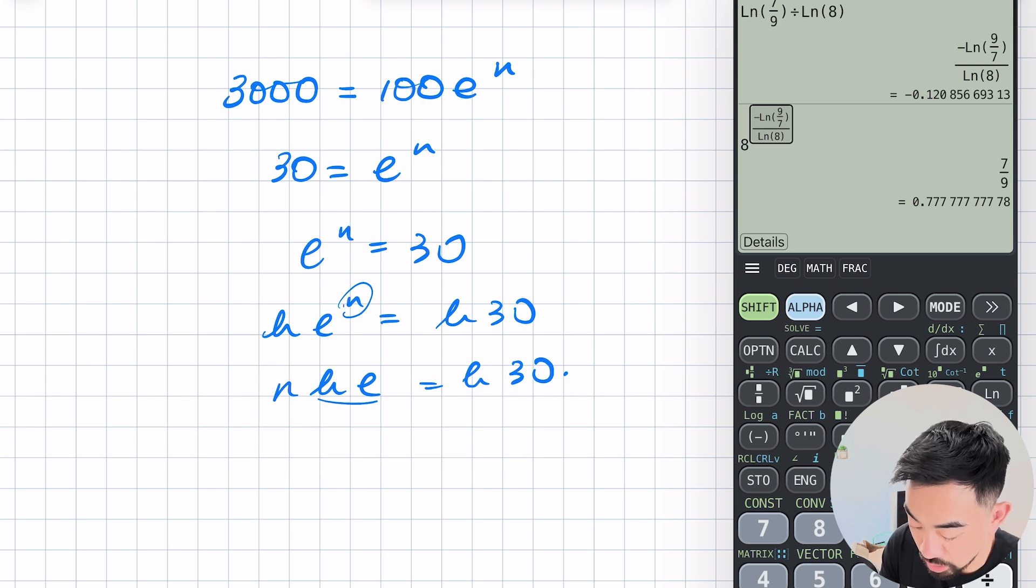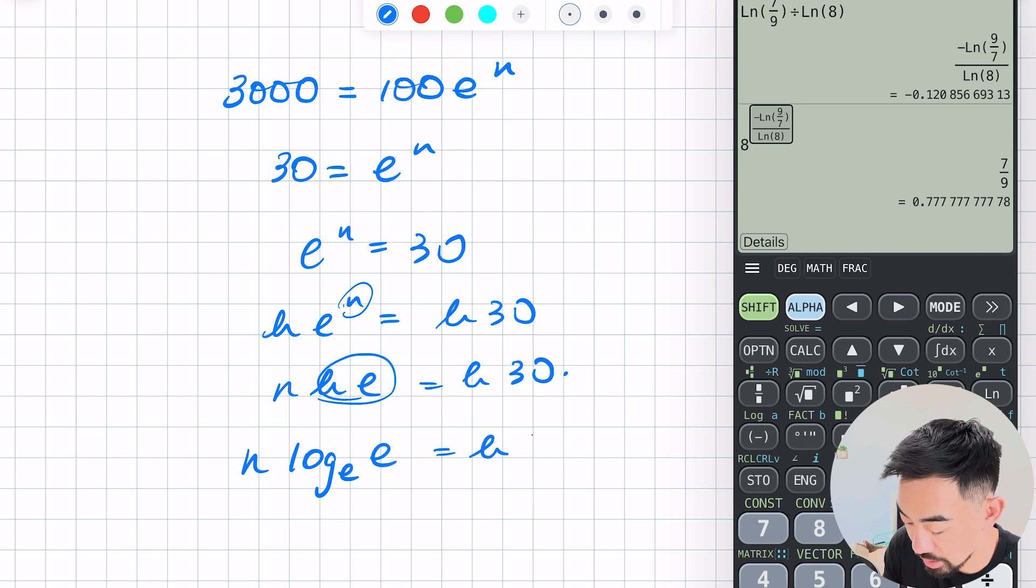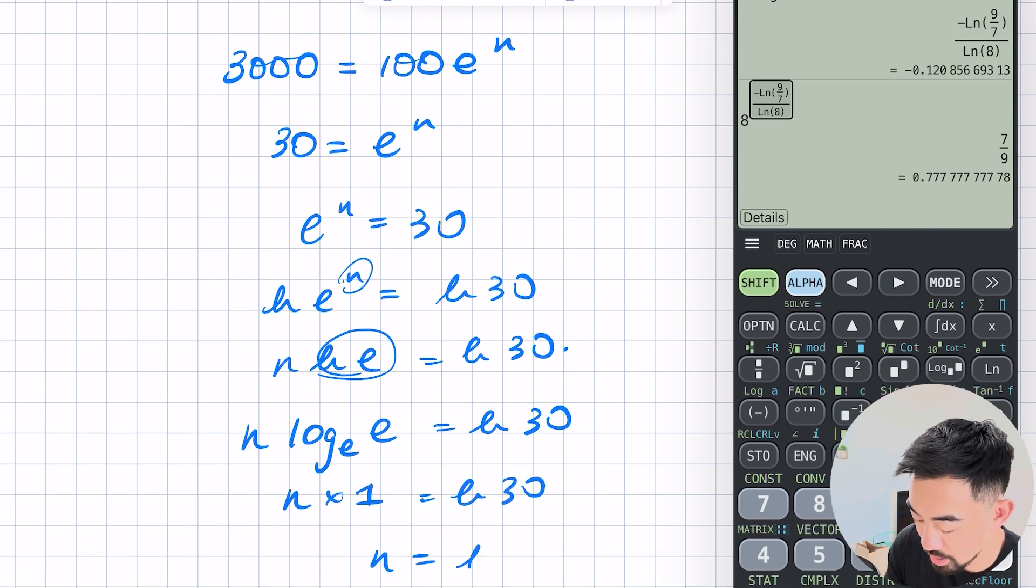Okay so you've got n ln e is equal to ln 30. Now if I just rewrite this as the long kind of form log base e of e is equal to ln 30. What is log e of e? Well it's saying e to the power of what is going to give me e. Now that's clearly 1. So this will just be n times 1 is equal to ln 30. So n is just ln 30.